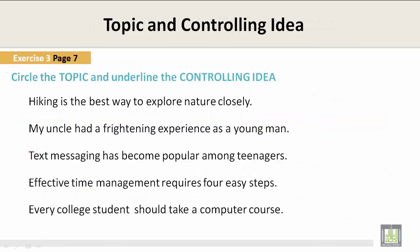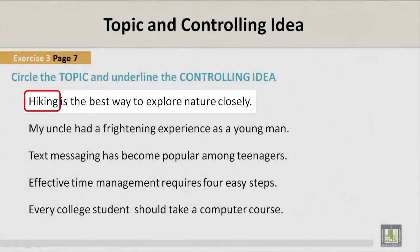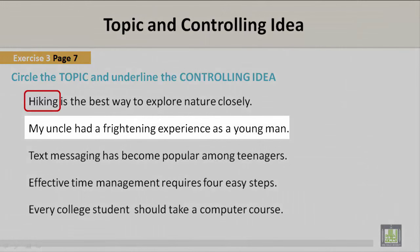Exercise three, page seven: topic and controlling idea. Circle the topic and underline the controlling idea. I'll read the sentence for you on this slide, and on the next slide I will show you the controlling idea. "Hiking is the best way to explore nature closely." The topic is "hiking." Next sentence: "My uncle had a frightening experience as a young man."